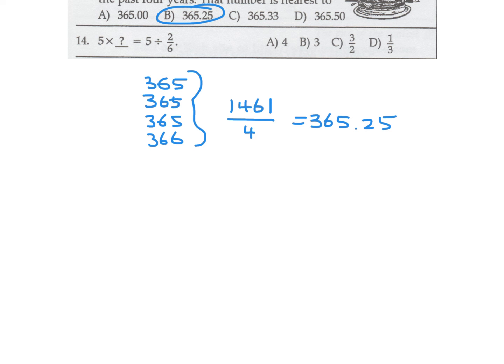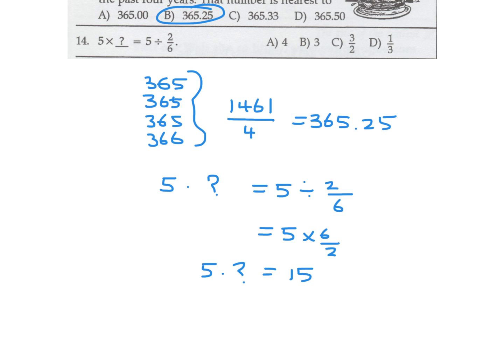5 times question mark equals 5 divided by (2/6). Invert and multiply: 5 times 6 over 2 equals 5 times 3, which is 15. So 5 times something equals 15, meaning that something must equal 3. Number 14, the answer is B.